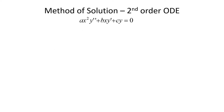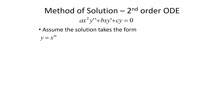To solve a Cauchy-Euler equation, for a second order ODE it will look like ax²y'' + bxy' + cy = 0. We assume the solution takes the form y = x^m, so y' = m x^{m-1} and y'' = m(m-1) x^{m-2}.